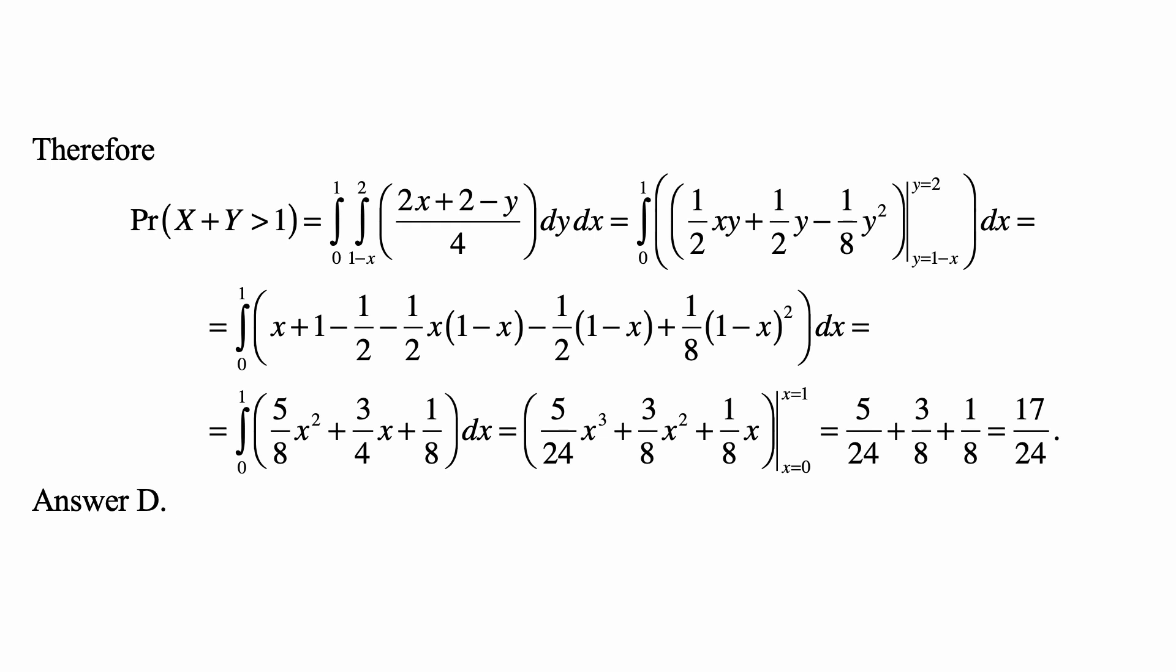And we evaluate this from y equal to 1 minus x to y equal to 2. And once we evaluate it, we'll take the integral from 0 to 1 with respect to x of the result of this evaluation. So we do this evaluation. We find the value at 2 and the value at 1 minus x, and we show them here. So what happens when y is equal to 2?